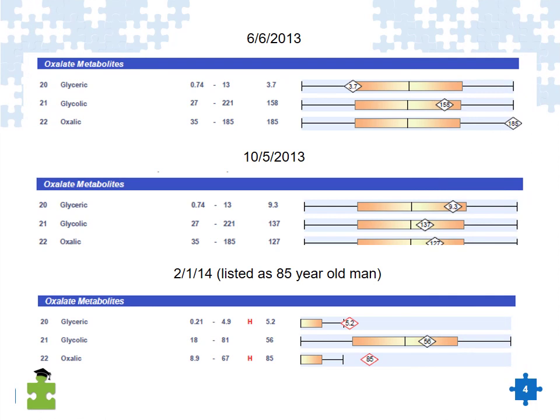This is an example of an organic acid test, just looking at the oxalate metabolite section. Notice that the reference ranges for oxalic were 35 to 185. This is a male, an eight-year-old boy. So the reference range will be specific to that age group and that sex. Coming to October 2013, the reference range is the same.